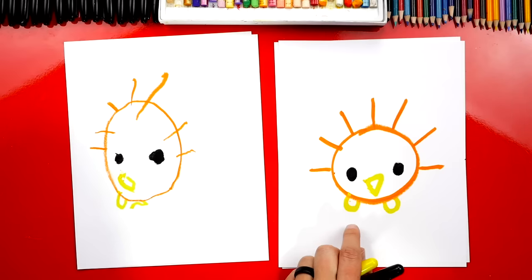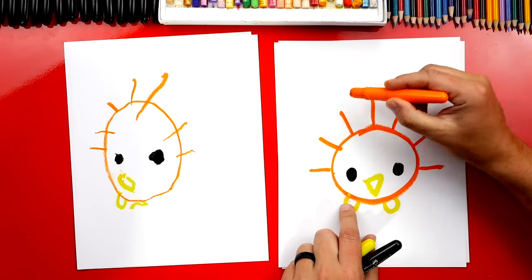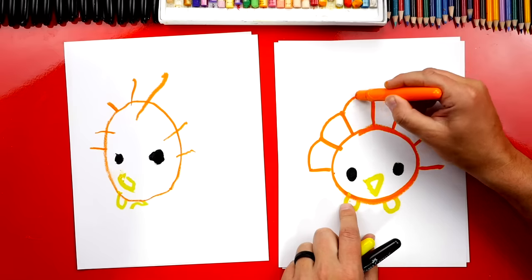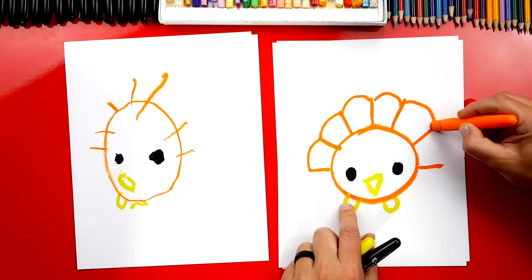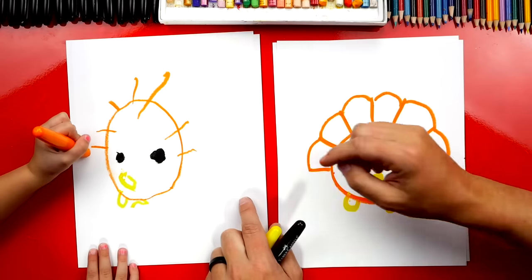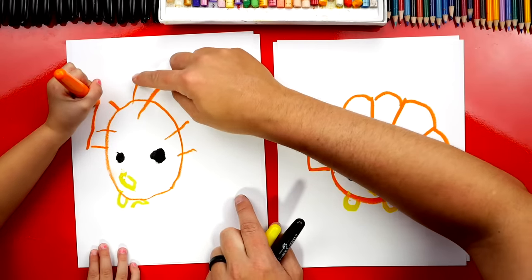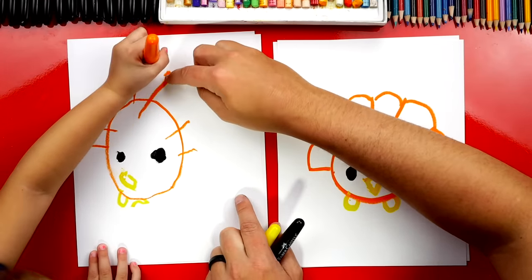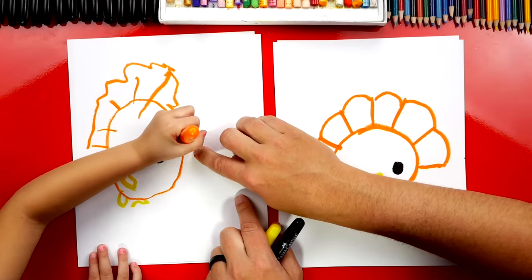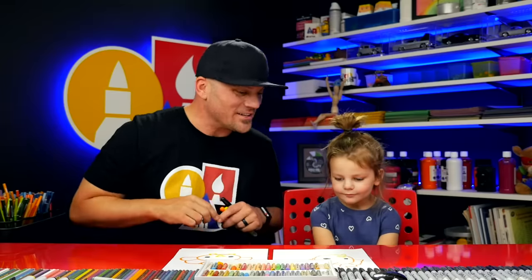This next part is really tricky. Watch me. We're going to connect all of our feathers together. We're going to go boop, boop, boop, all the way over. All the feathers. Connect them. Do you want to connect your feathers? Right there. And there. And there. Yes. Right here. And then right here. And then right here. Your turkey looks so cute.